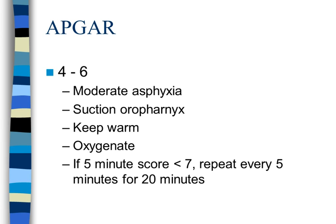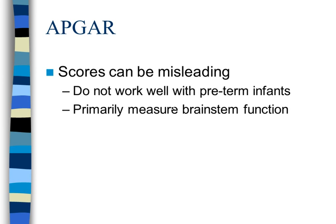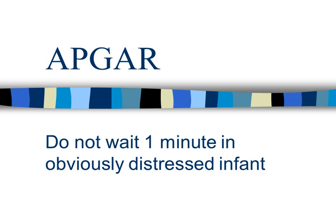APGAR 7–10 is normal — suction the oropharynx and keep the baby warm with a fresh, dry blanket. APGAR 4–6 indicates moderate asphyxia — suction, keep warm, oxygenate, and rescore every five minutes for 20 minutes if the five-minute score is below 7. APGAR 0–3 is severe asphyxia requiring aggressive resuscitation. Do not wait one minute to intervene if the infant is obviously distressed — act immediately.